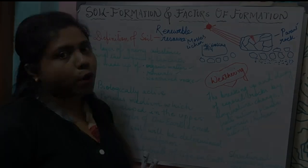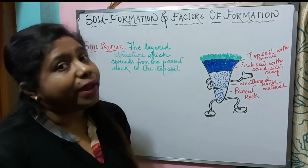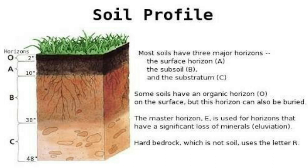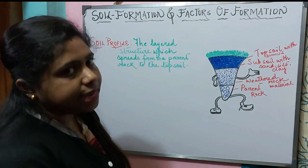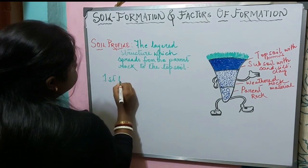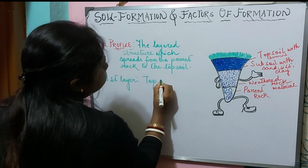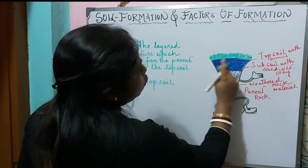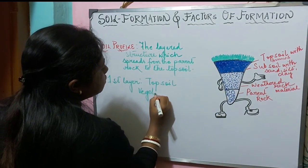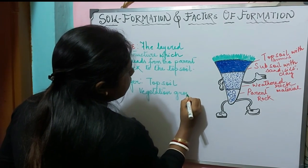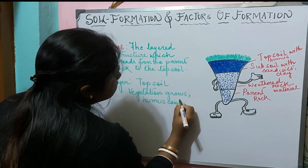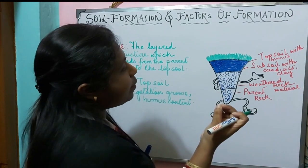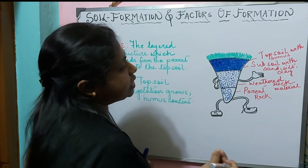Now let us understand the layers of soil and what is soil profile. You can see here the diagram of the soil profile. This is a layered structure which spreads from the parent rock to the top soil and is referred to as a soil profile. The first layer is the top soil — the layer where vegetation grows. This is also the layer which has humus content, meaning the layer where vegetation can grow.